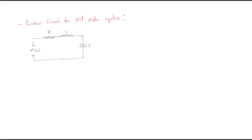Now let's look at a practical circuit for the second order system. We already discussed first order circuits like RL and RC. For a second order system we need two storage elements — here L and C — making it a second order system. We apply an input source voltage and take the output voltage across the capacitor as V_out(s).